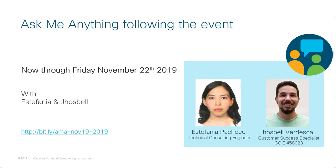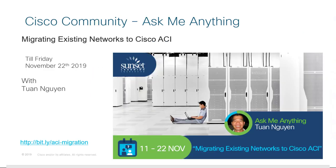If we were not able to provide an answer to your question during this live session — maybe because we needed to validate information or because we had too many questions — you will be able to find the answer there. We will place all the information in the chat so you can access this event. We'd also like to invite you to a special Ask Me Anything event about how to migrate existing networks to Cisco ACI — Cisco Application Centric Infrastructure — taking place until Friday, November 22nd.